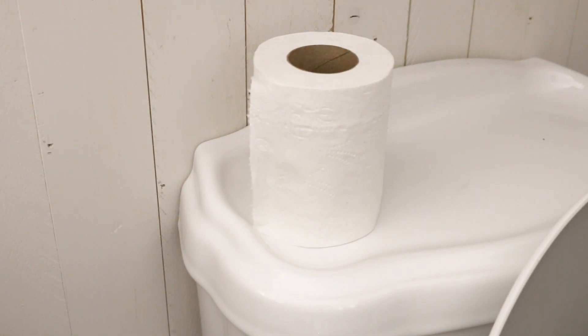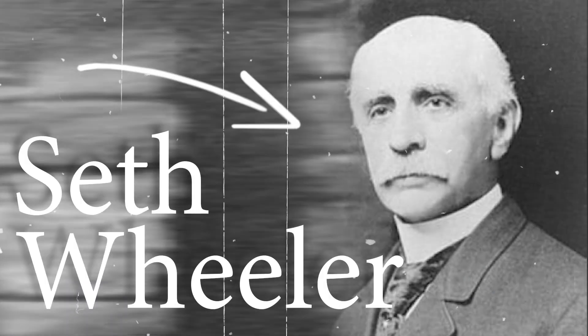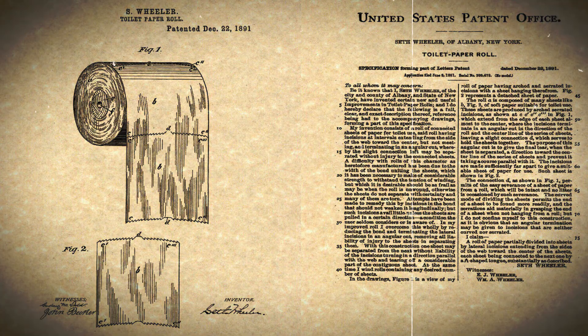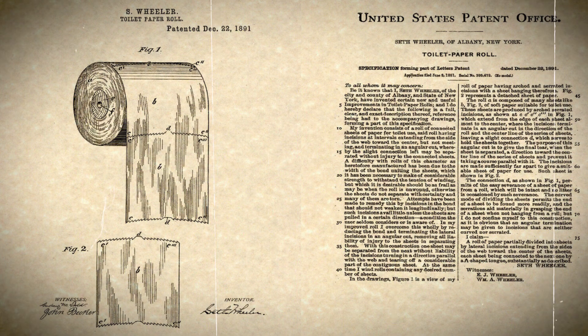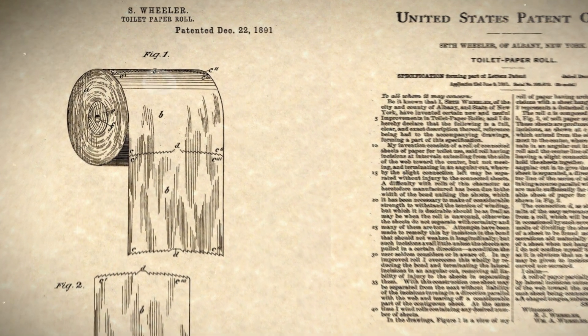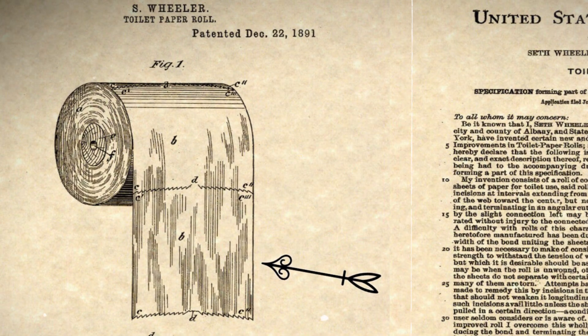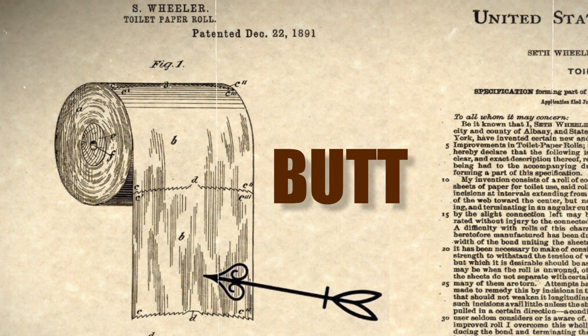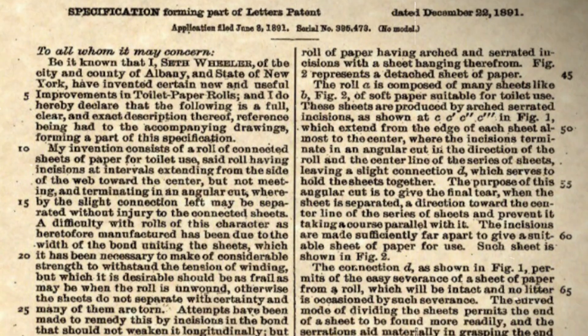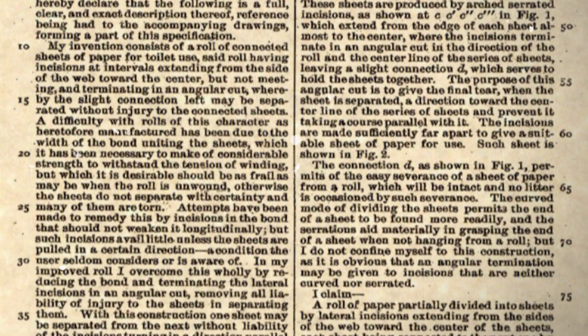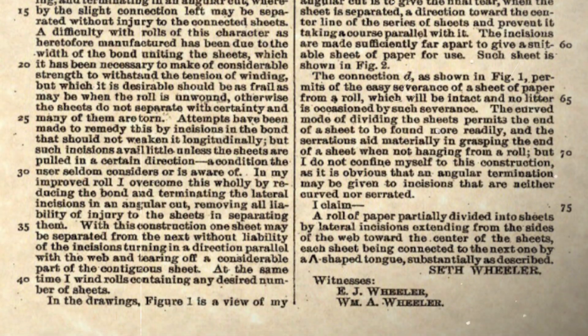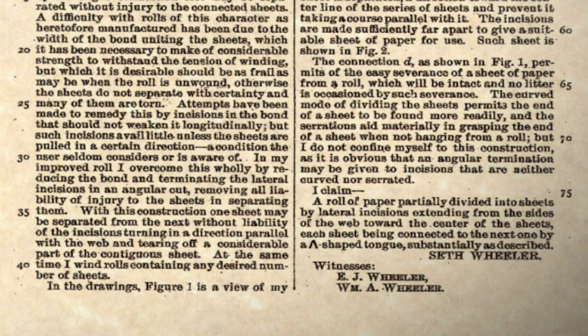Haha — give a crap, get it? So when Seth Wheeler, the creator of the roll of toilet paper, illustrated the patent to his futuristic idea in 1891, it clearly showed the leading edge of the paper was over and not under. But it was never specified anywhere that it couldn't be used in the under position, leaving place to this worldwide controversial debate that everyone's arguing about.